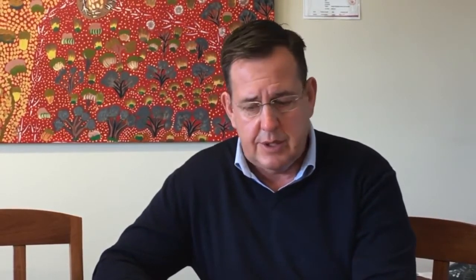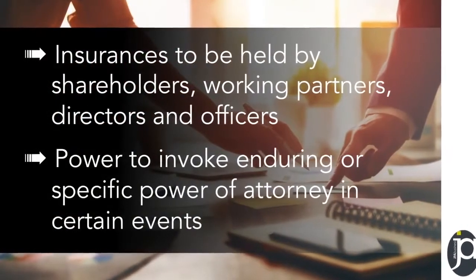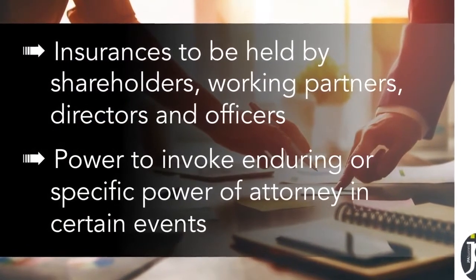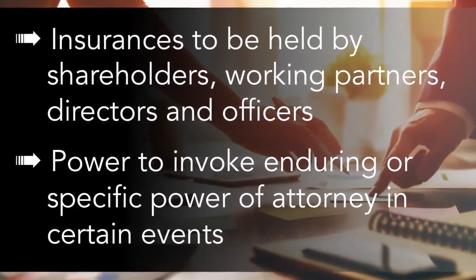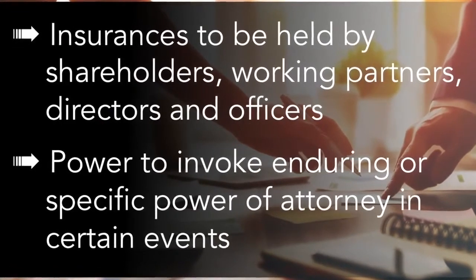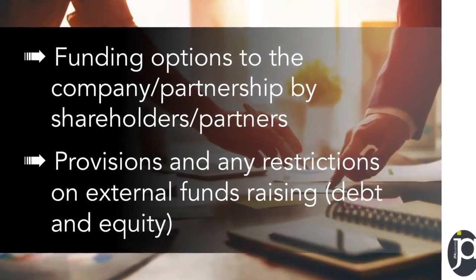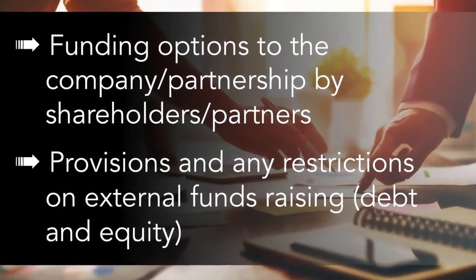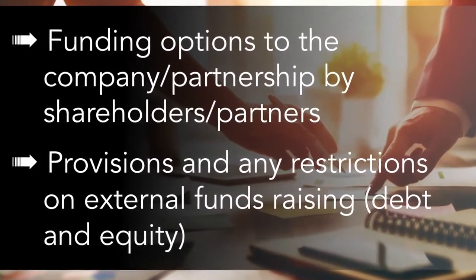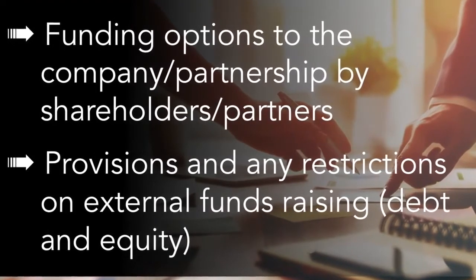The second area of a shareholders agreement covers risks, issues, and capital funding associated with your business. Here it's about ensuring the shareholders agreement provides for certain insurances you might need to cover directors' liability and working partners' activities, the power to invoke specific powers of attorney in certain events, and the funding options of the company or partnership — whether there should be a call on shareholders for additional funds, whether the company should be funded by debt in the first instance, and when you can go outside the existing pool of shareholders to secure funds externally.